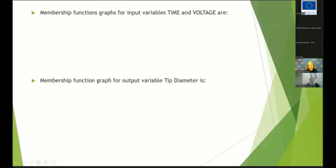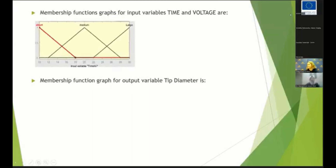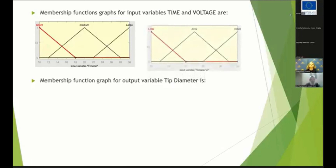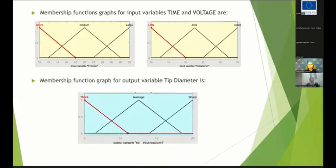We always use membership functions in this simulation. The input variable time has three membership functions: short, medium, and large — meaning we can save time by shortening it and increasing the voltage, reducing fabrication time. Then we have voltage with three membership functions: low, average, and high. For tip thickness, which is in micrometers, we have: thick, average, and sharp. These are the membership functions used in the simulation.